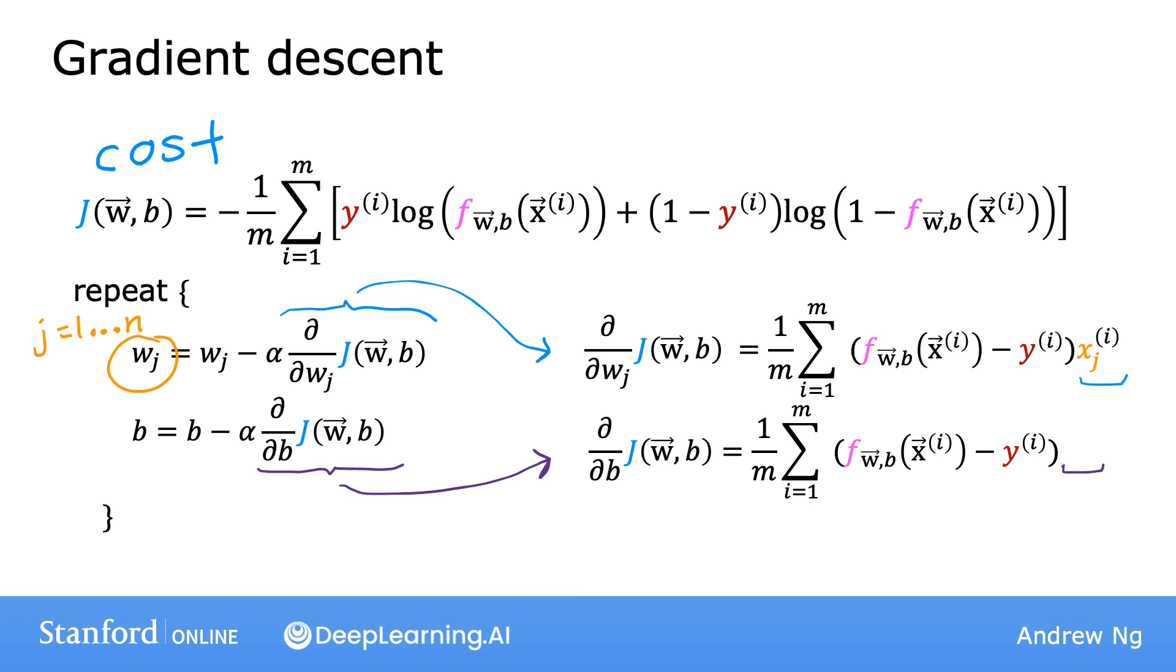So just as a reminder, similar to what you saw for linear regression, the way to carry out these updates is to use simultaneous updates, meaning that you would first compute the right hand side for all of these updates, and then simultaneously overwrite all the values on the left at the same time.